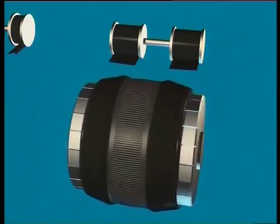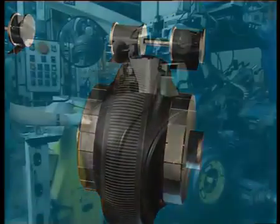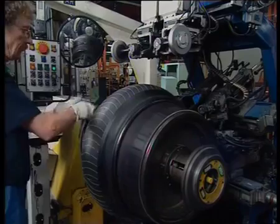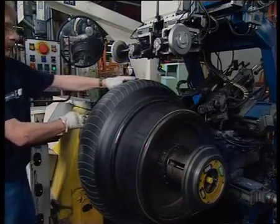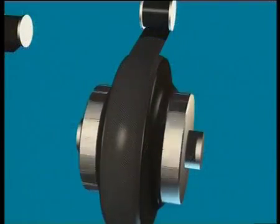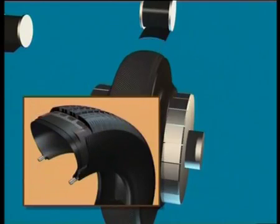The tyre is then shaped by inflating the central section of the drum. Two plies are applied to the crown of the tyre.